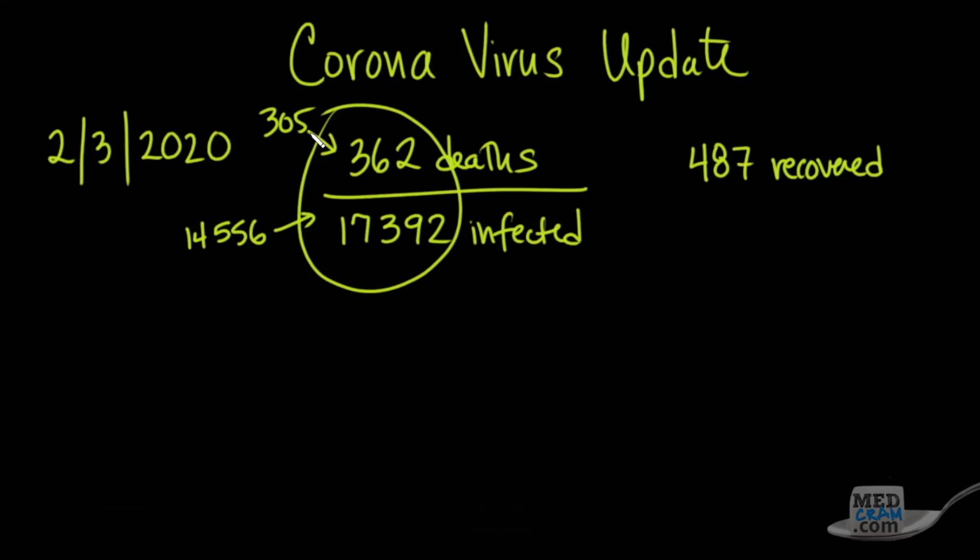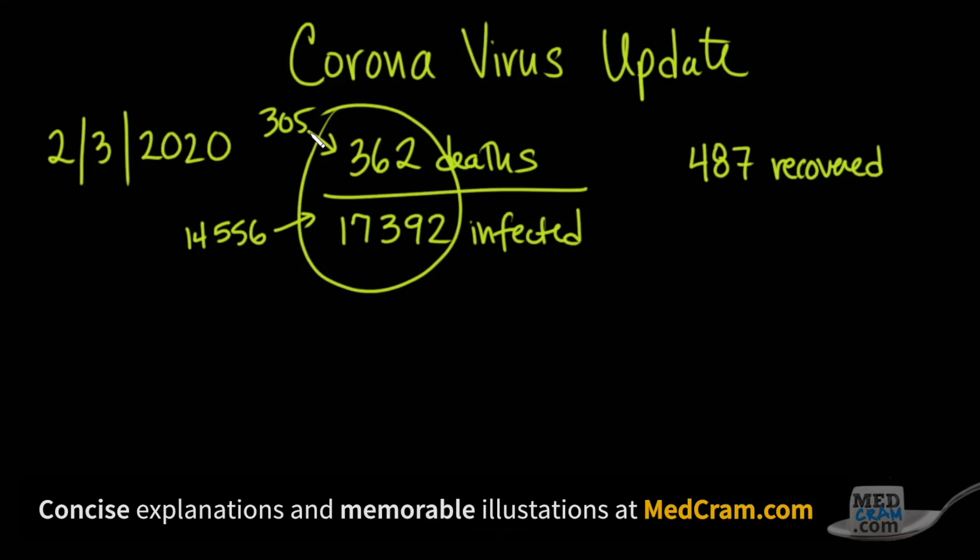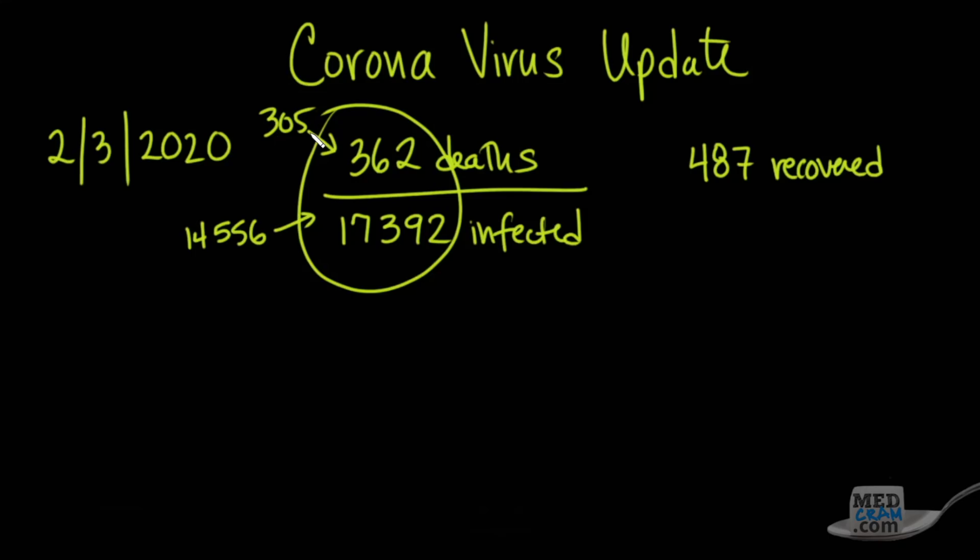Now this ratio that we're looking at here is simply the ratio of confirmed deaths to confirmed infected. Of course, people are going to be diagnosed with the infection before they might have a chance of dying, so there's a time lag there. So it's not an accurate case fatality or mortality rate, but it is something that we can look at and track.